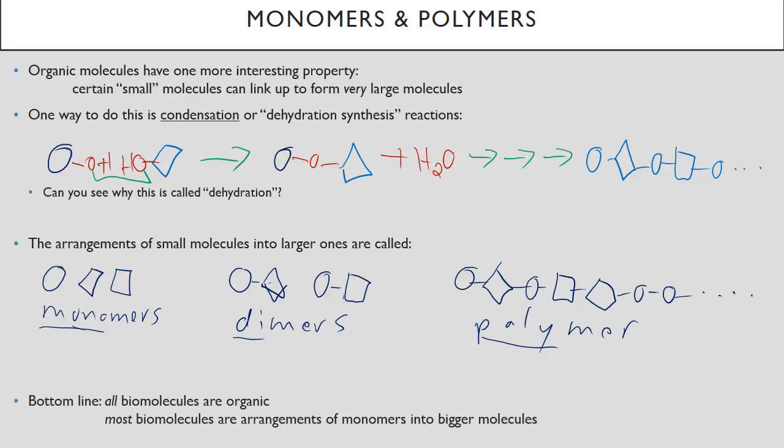And the bottom line of this story here is that all biomolecules that we'll be dealing with, all four kinds of biomolecules are organic. And most biomolecules, at least most of the interesting ones, are arrangements of monomers into bigger molecules. So we're now going to look at all four of the major classes of biomolecules. And in most cases, we're going to talk about the monomers and how they get arranged into bigger molecules.